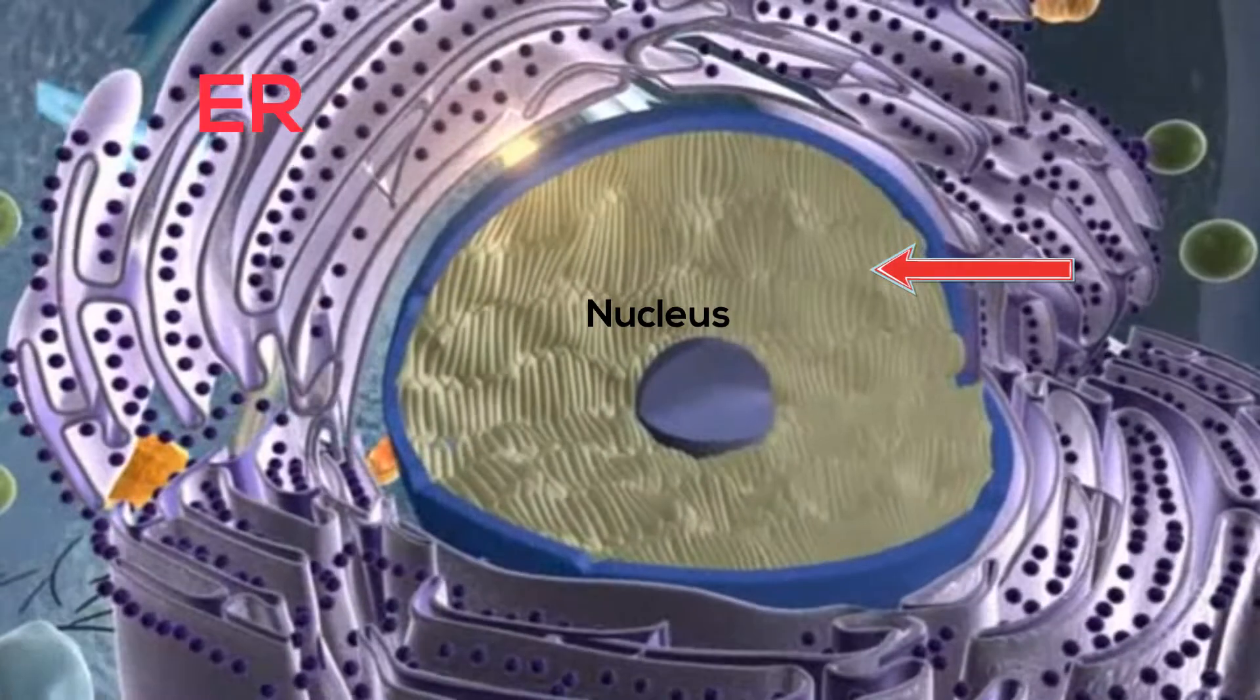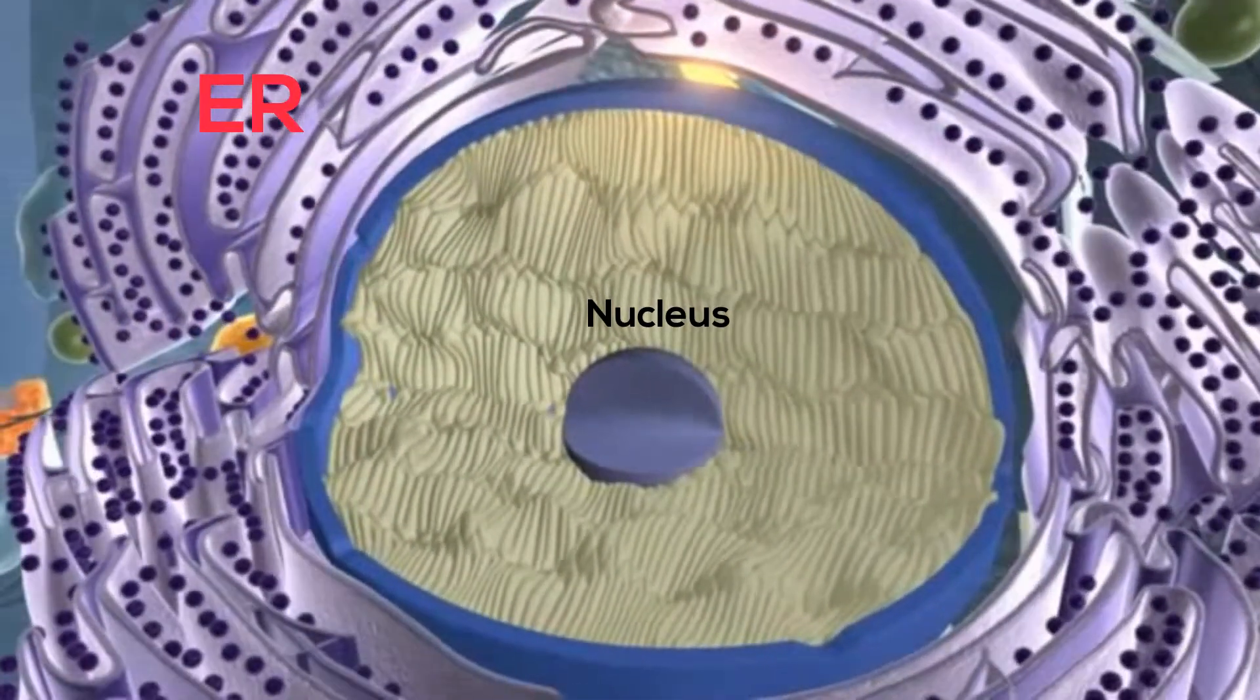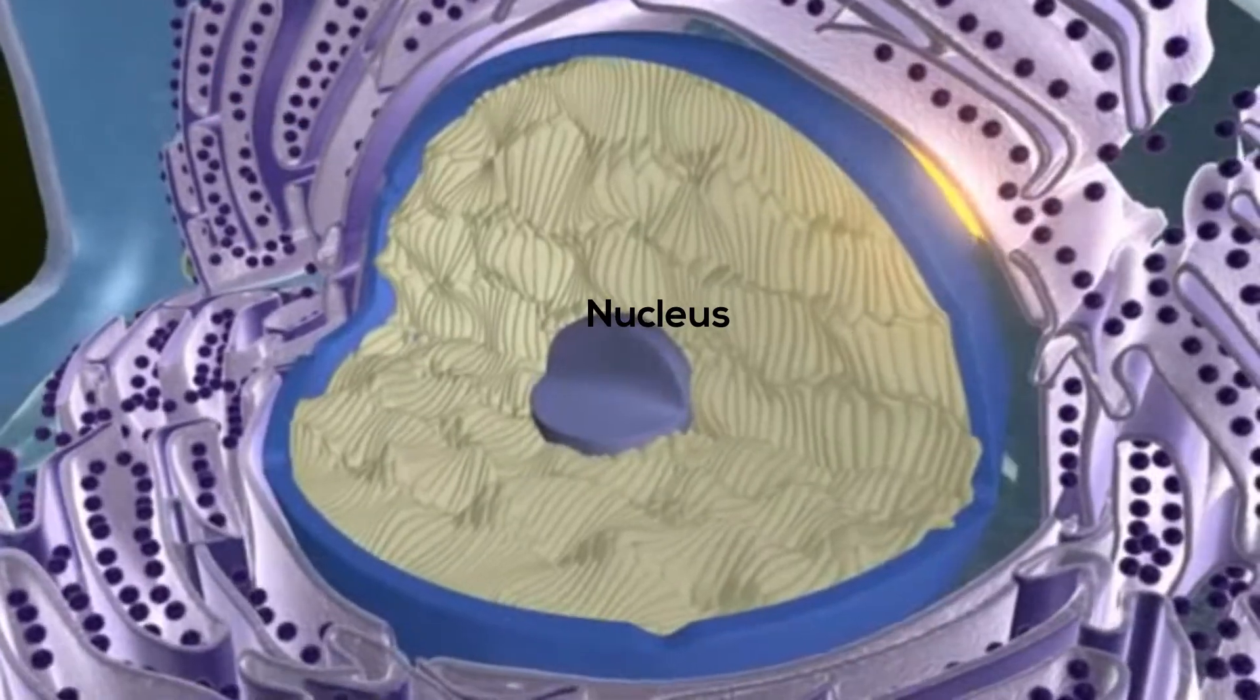The ER is located near the nucleus and helps the cell transport important materials throughout the cell. Let's look more closely at the function of the ER.